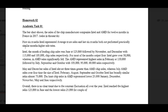For Intel, the month with the highest chip sales was June at 125,000, followed by November and December with 115,000 and 105,000 chip sales respectively. For most of the months, output from Intel grew — though I'm unsure if you mean 'grew over 50,000' or 'grew to over 50,000.' Those mean very different things: if it was at 20,000 and grew over 50,000, it became 70,000. Whereas AMD sales significantly fell.